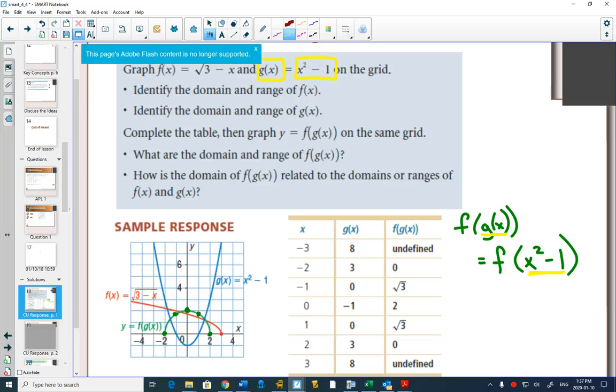Now, I want to find out what f(x) is. Well, f(x) says whatever you plug in, plug it in again there. So I'm going to have this equal to a square root of 3 - x. Well, what did I plug in? I plugged in an x² - 1. If I simplify this, I'm going to get the square root of -x² + 4.